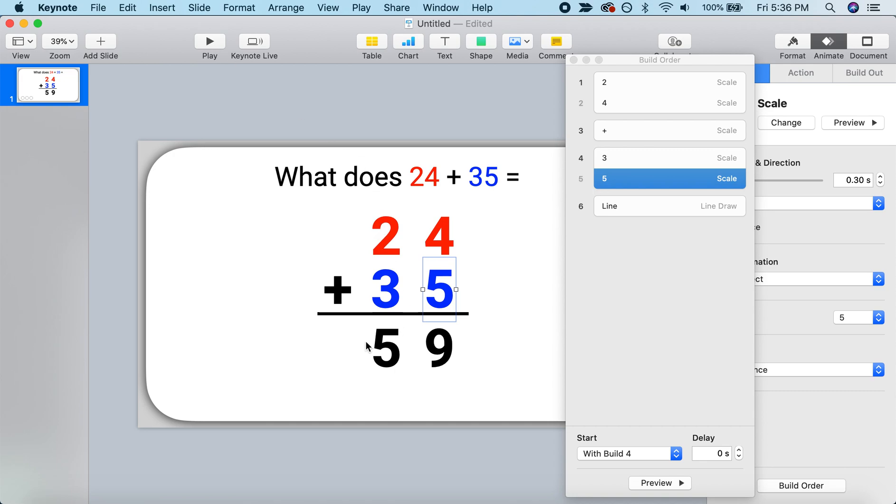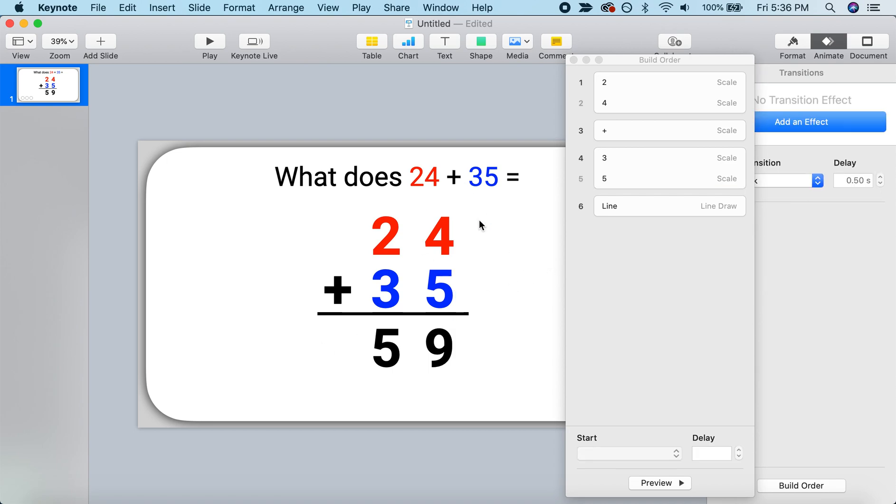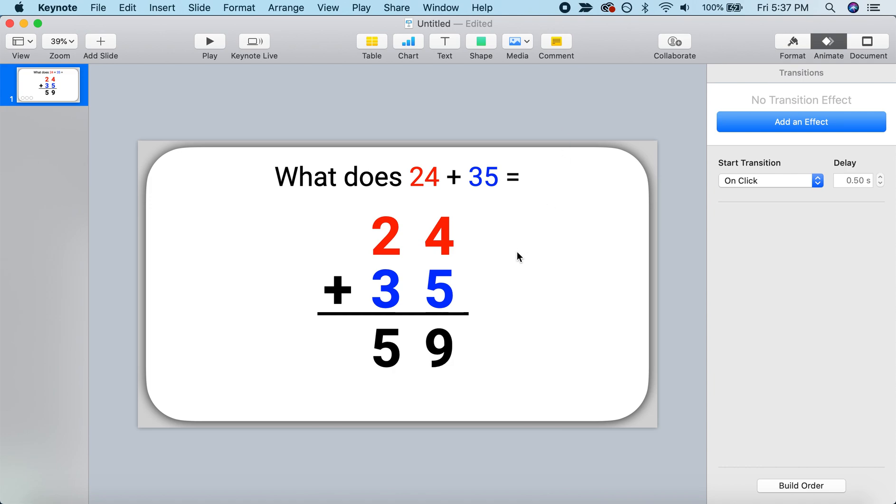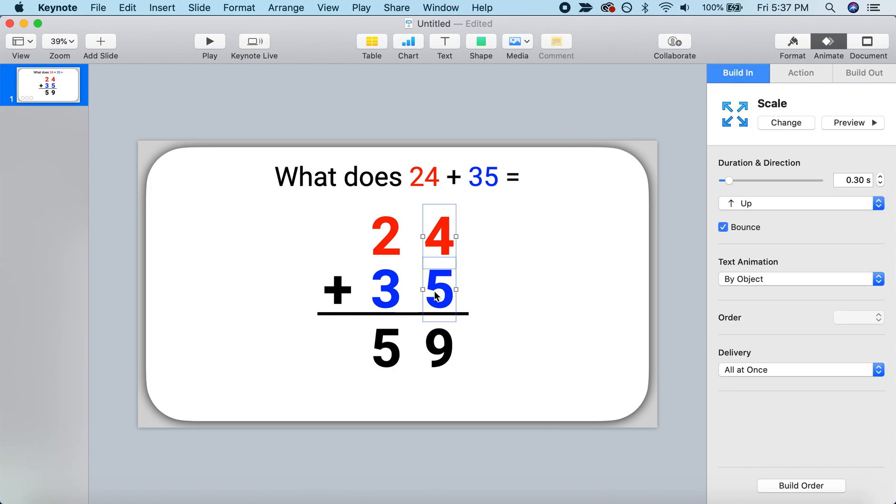So now the next thing is how would we actually go about solving this for a student? Well, what you would probably do on a whiteboard is show them that you're going to look at this 4 ones and 5 ones and add them together. You want students to be focusing on the 4 ones plus 5 ones. And we can do that using an animation.